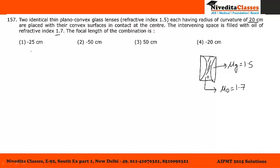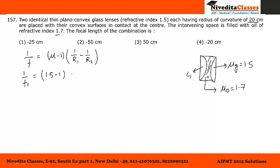Let us call this Lens 1. For the focal length of Lens 1, we use the formula: (mu - 1) into (1/R1 - 1/R2). For Lens 1, R1 is infinity and R2 is minus 20. Taking all values in centimeters, this gives us 0.5 divided by 20, which equals 1 divided by 40.